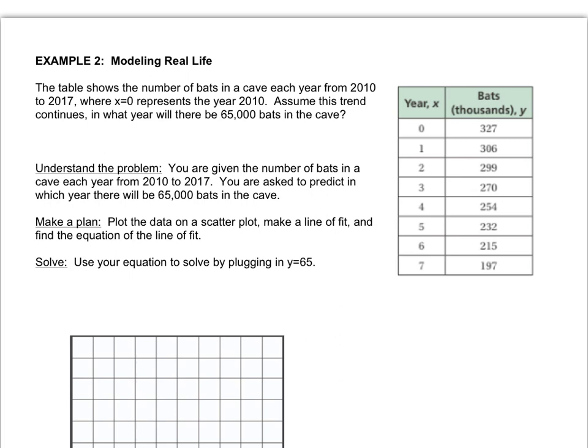Last one, the table shows the number of bats in a cave each year from 2010 to 2017, where x equals 0 represents the year 2010. So the starting number is at the year 2010. That's what year 0 is. Assume this trend continues. In what year will there be 65,000 bats in a cave? So it gives us a setup, so don't freak out that you don't know what to do. So it tells us the first thing that we have to do is kind of just understand what they're asking us. We're given the number of bats, and they want us to predict when there will be a certain number of bats.